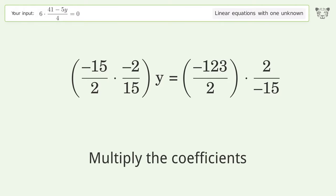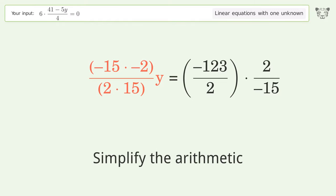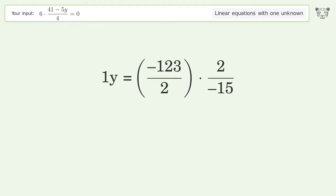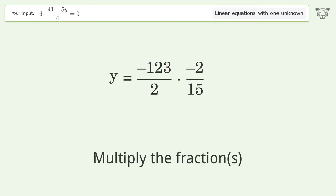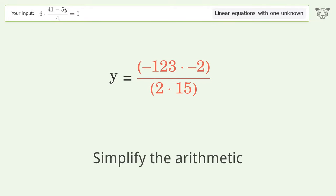Multiply the coefficients and simplify the arithmetic. Move the negative sign from the denominator to the numerator. Multiply the fractions and simplify the arithmetic.